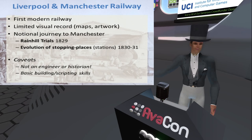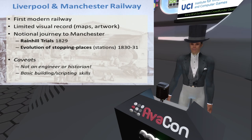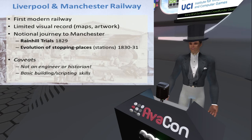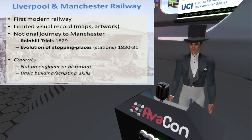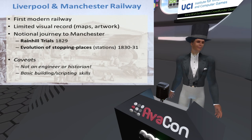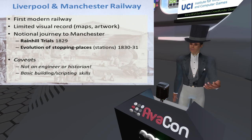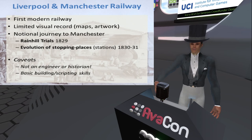I will be taking you on a notional journey from Liverpool to Manchester in 1830 or thereabouts, introducing some of the places and events that took place and some of the structures built along the line. In particular I'll be talking about the Rainhill Trials, which determined that locomotives were actually the way to go. I'm also going to talk about the evolution of stopping places — what we now regard as intermediate stations — which they weren't terribly interested in at the time.